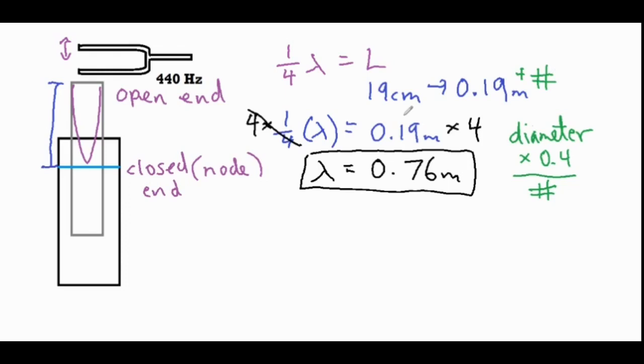What that accounts for is a little bit of air that's vibrating above the tube. How specifically that formula got developed, I'm not quite sure, but I know that is an additional measure that you could implement in order to make your calculation a little bit more accurate. I'm not going to do that, but feel free to use that if you would like.